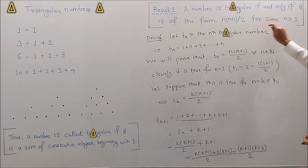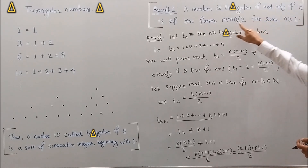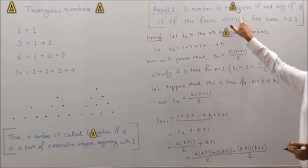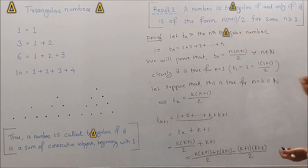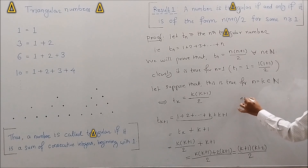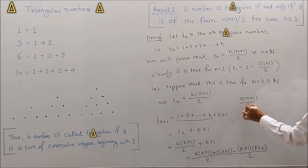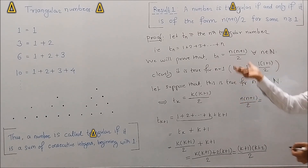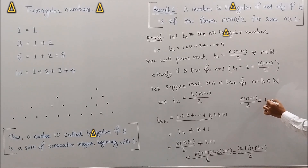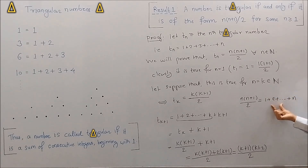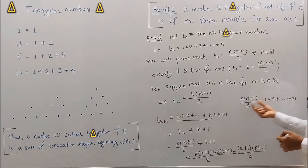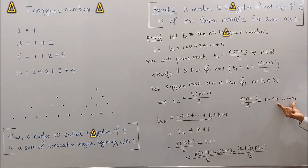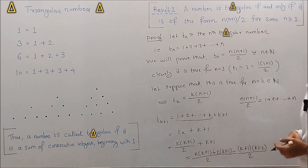The converse part: if a number is of the form n(n+1)/2, then it is a triangular number. If a number is of the form n(n+1)/2, this is nothing but the sum 1 + 2 + … + n, and so by definition of triangular numbers, every number of this form is a triangular number. This proves the result.